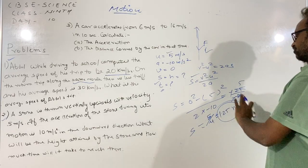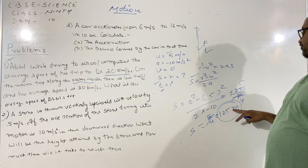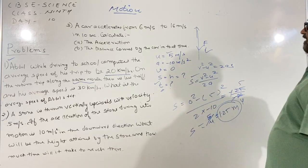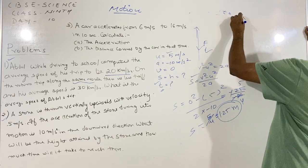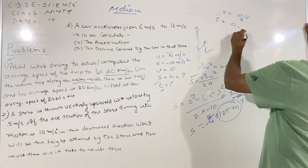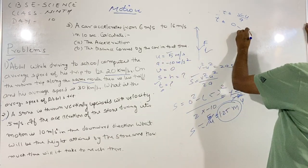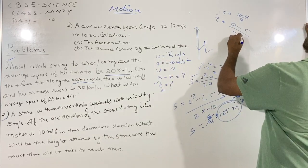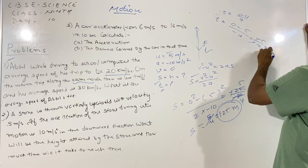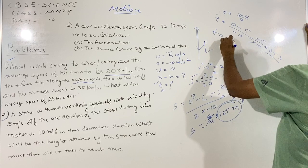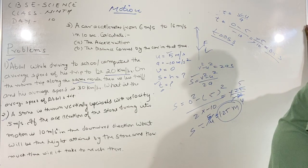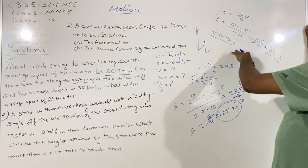So the stone will reach a height of 1.25 meters above the ground. Now let us calculate time using the first equation of motion. t is equal to (v − u) over a; t is equal to (0 − 5) over (−10), that is −5 over −10, which is 0.5 seconds. So time taken by the stone to reach that height is 0.5 seconds.